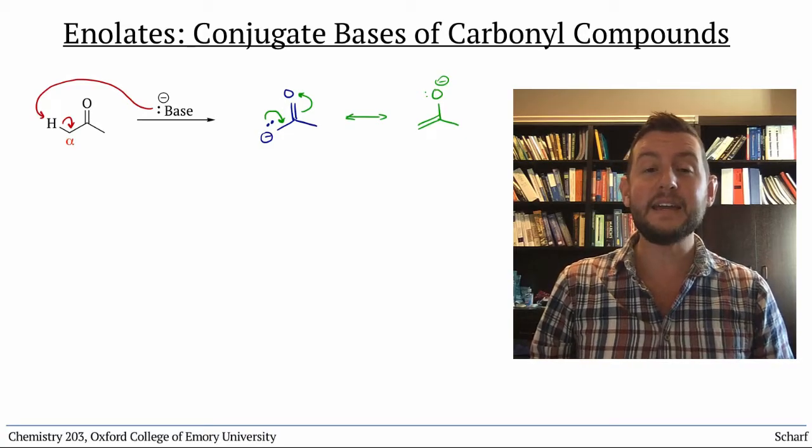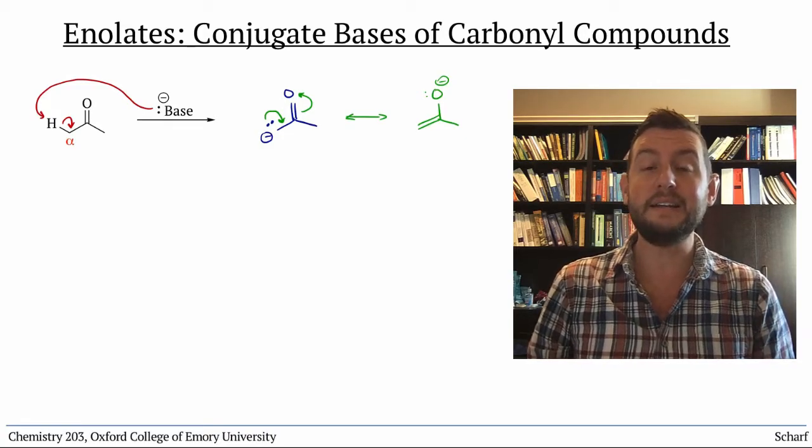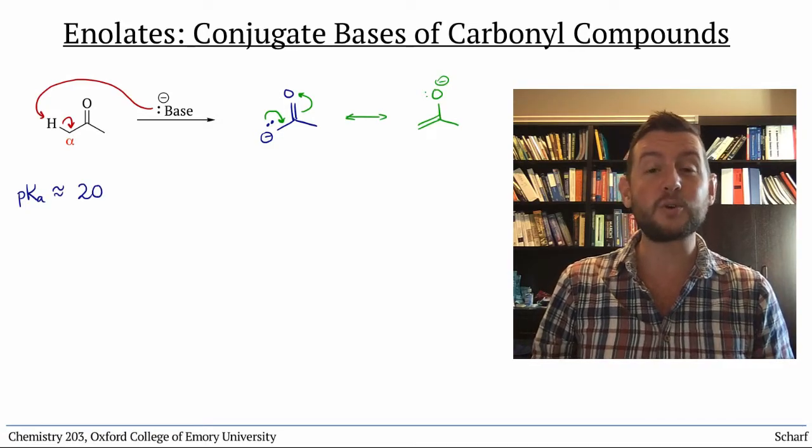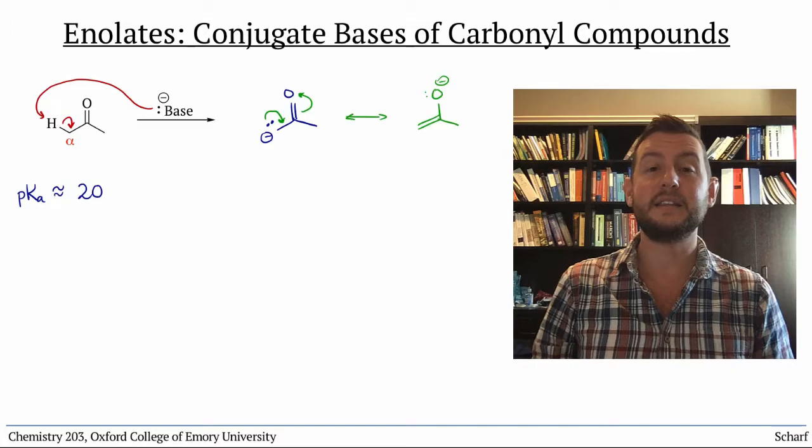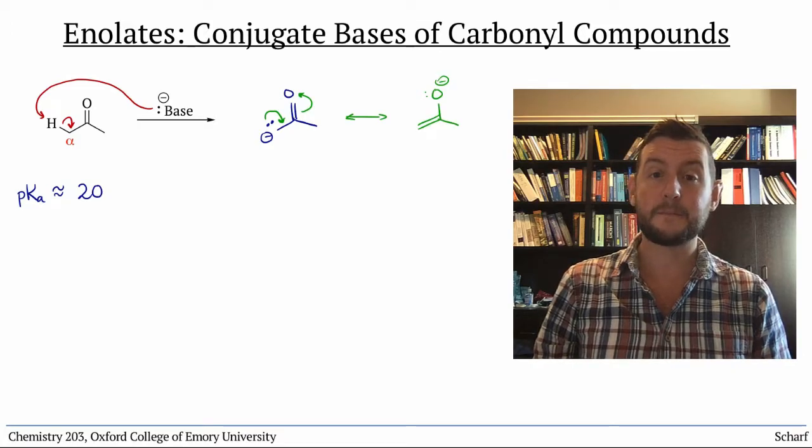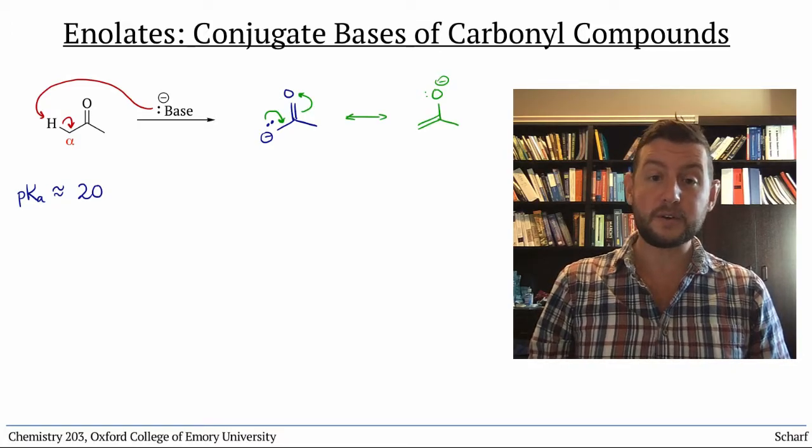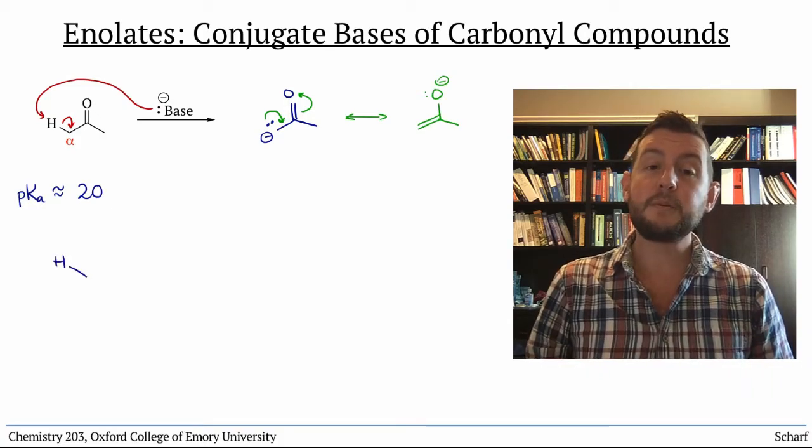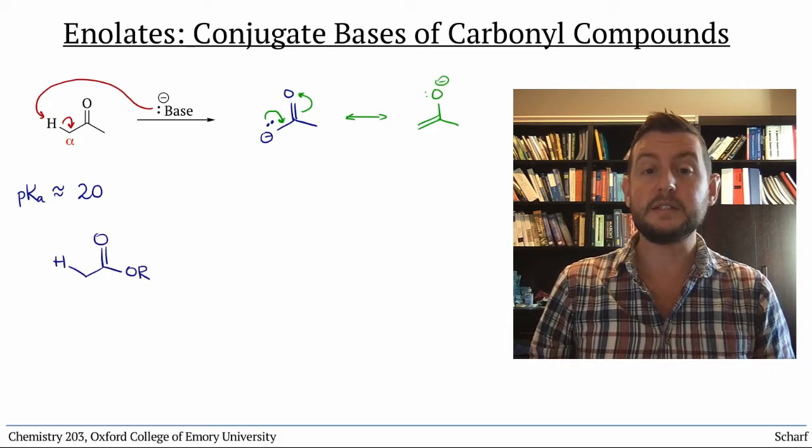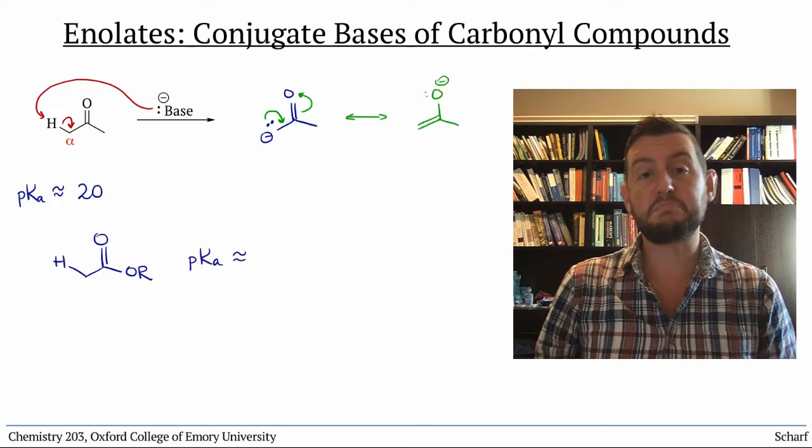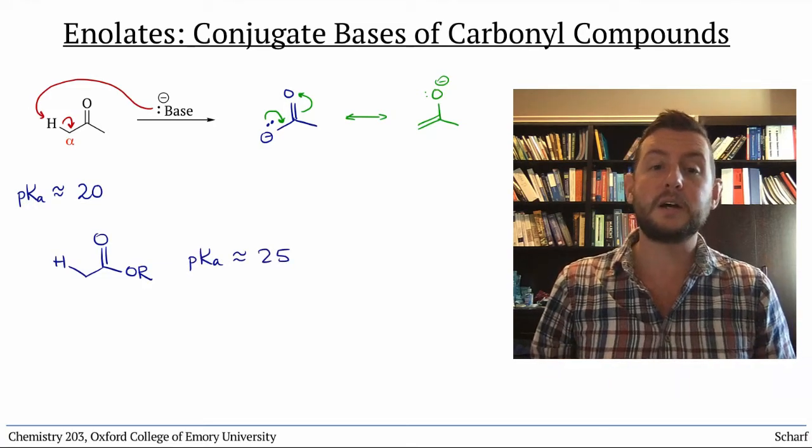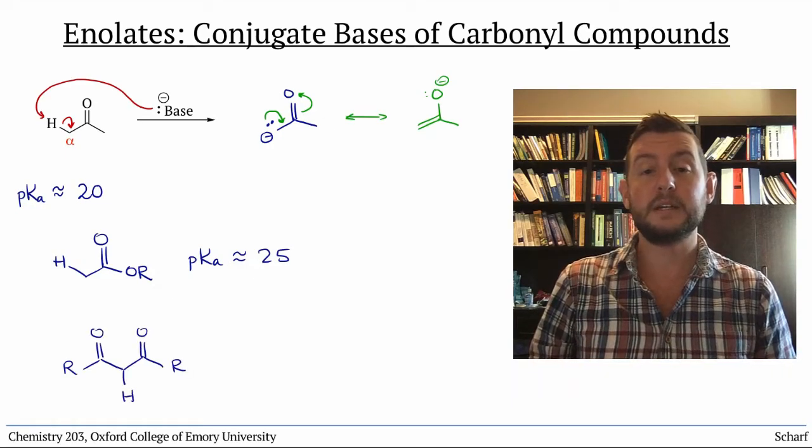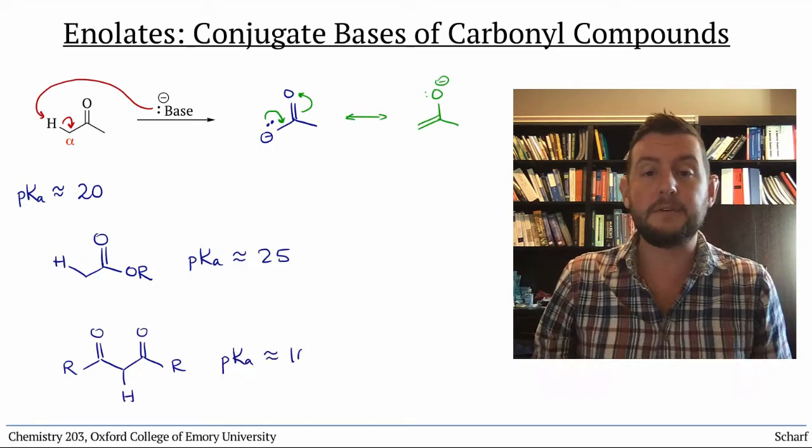In fact, the pKa of the average ketone or aldehyde is around 20, more than 25 orders of magnitude more acidic than the average alkane. The pKa's of other carbonyl compounds vary over several orders of magnitude. The alpha-protons of esters, for instance, have pKa's around 25, while the protons immediately between two carbonyl groups have pKa's between 10 and 15.